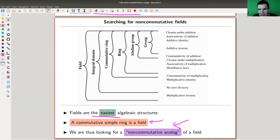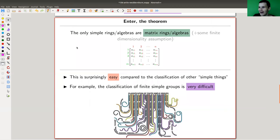And it turns out that there's a very beautiful classification. It's extremely satisfying. The only simple rings or algebras are matrix rings or algebras, really just matrices. That's it. Nothing fancy. 2×2 matrices, 3×3 matrices, 4×4 matrices, any of them. And this is really absolutely easy.